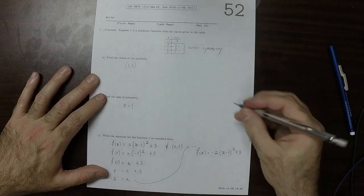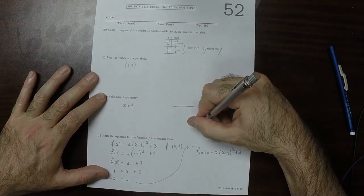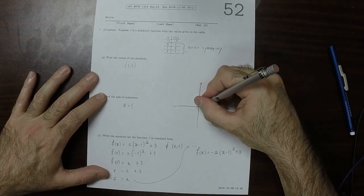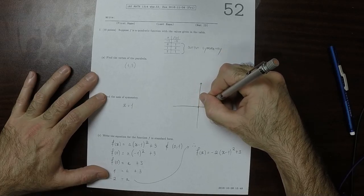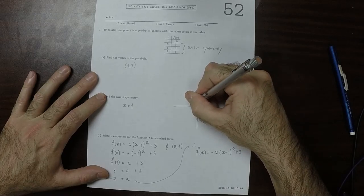And just to make sure that that seems reasonable, let's make a quick sketch. So we'll plug in 0, 1, 2, and negative 1.